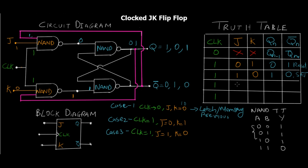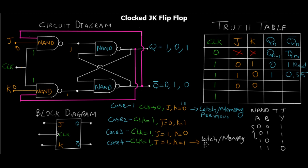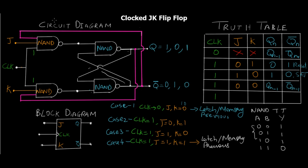Now let's see what happens for J equals zero, K equals zero. Both outputs will be one-and-one, and when we supply one-one to the SR latch we get the previous output — the latch state. Case four: clock equals one, J equals zero, K equals zero — we always get the latch state or memory state or previous state. So the output is going to be Q(n-1) and Q-bar(n-1), that is the previous state.